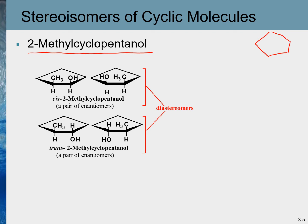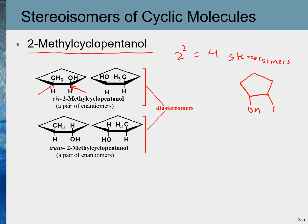2-Methylcyclopentanol has two stereocenters, so we predict it will have 2² = 4 stereoisomers. One obvious choice is the cis and trans stereoisomers.